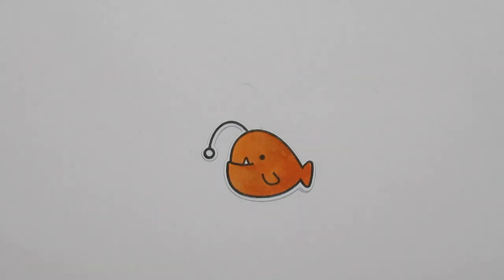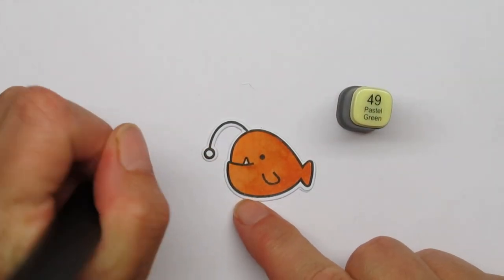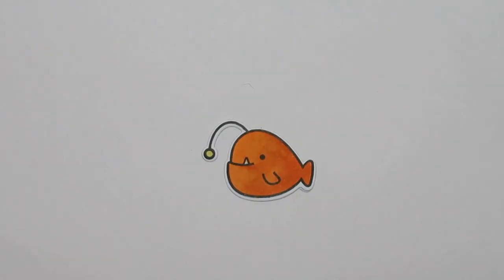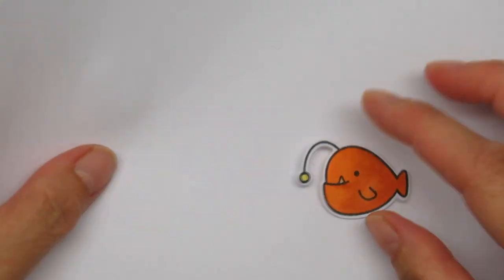And I did look up anglerfish on the internet and they seem to be brown or orange. I'm not sure what they really look like. Just scary big teeth. That's all I know.